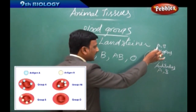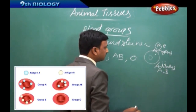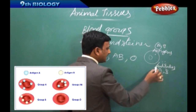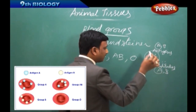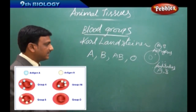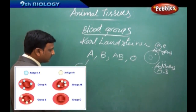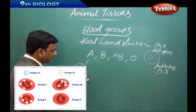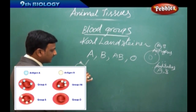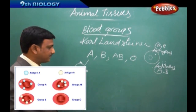Depending upon the type of antigen present on the RBC and the type of antibodies present in the plasma, the blood group is decided. For example, a group A person has antigen A on their red blood cells and antibody B in the plasma.